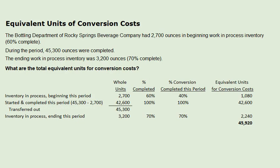The approach to solving this problem is to lay out the inventory into groups. The first group is inventory in process at the beginning of this period. There are 2,700 units, 60% completed. Since 60% is completed, then 40% is the percent conversion completed this period.